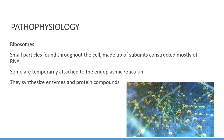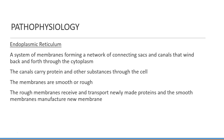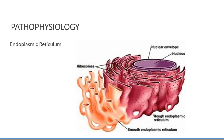Ribosomes are small particles found throughout the cell, made up of subunits constructed mostly of RNA. Some are temporarily attached to the endoplasmic reticulum. They synthesize enzymes and protein compounds. The endoplasmic reticulum is a system of membranes that form a network of connecting sacs and canals winding through the cytoplasm. The canals carry protein and other substances through the cell. The membranes are either smooth or rough — rough membranes receive and transport newly made proteins, and smooth membranes manufacture new membranes.